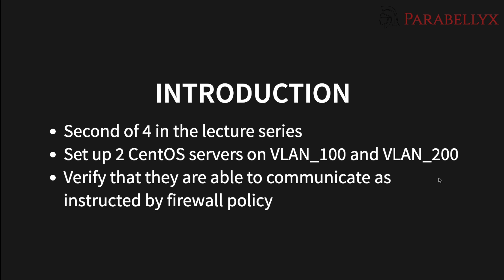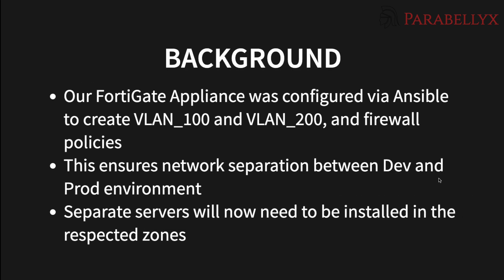In this video specifically, we're going to set up two CentOS servers — one on VLAN 100 and one on VLAN 200 — and then we're going to verify that they are able to communicate as instructed by the firewall policy. In our previous example, we used Ansible playbooks to set up VLAN 100 and VLAN 200 on our Fortinet appliance and also set up some firewall policies. These policies will eventually help us ensure a separation between the dev and production environments, and separate servers will now be installed on each of the respective zones.